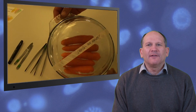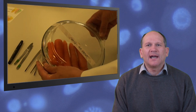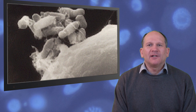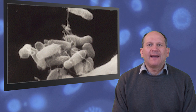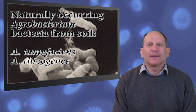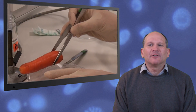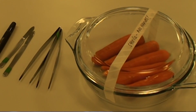Today we're looking at the effects of infecting carrot root sections with various strains of Agrobacterium. Three weeks ago we made some carrot root sections and infected them with two species: Agrobacterium tumefasciens and Agrobacterium rhizogenes, to see if Agrobacteria had any effect on the growth.